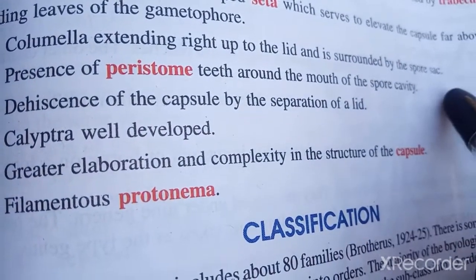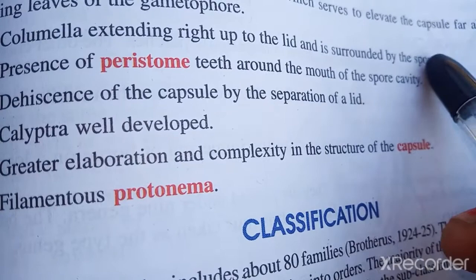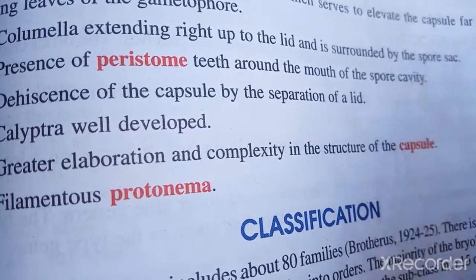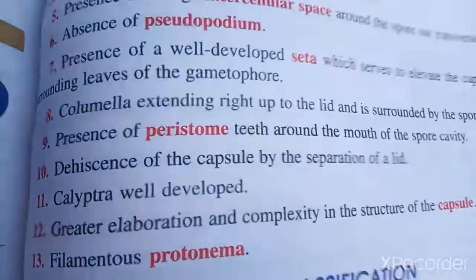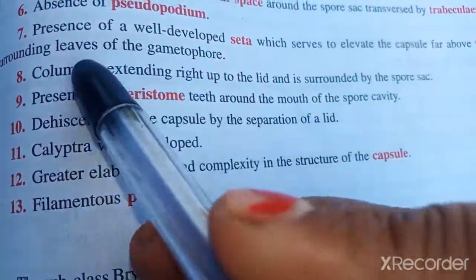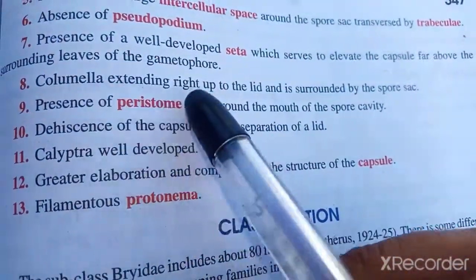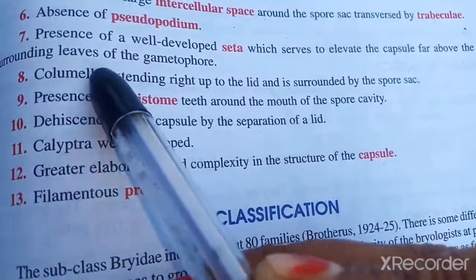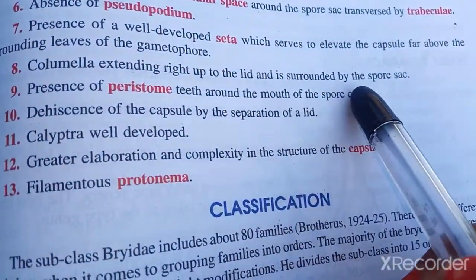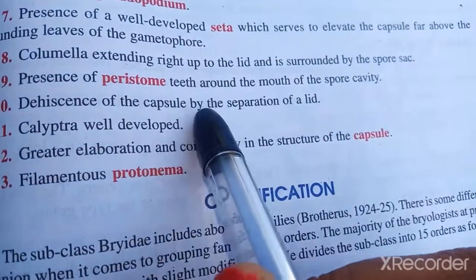The embryo is covered by a protecting layer called the calyptra. The columella expands upward forming the spore sac, and the intercellular space also extends upward, leading to the spore sac capsule surrounded by separation layers.